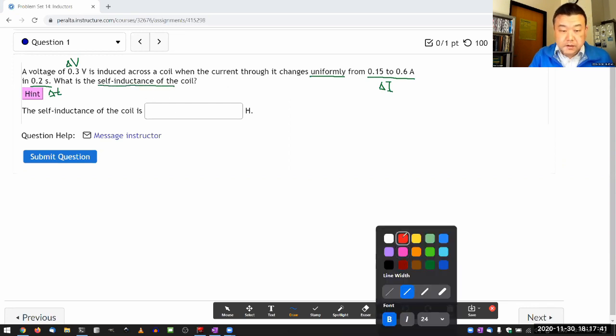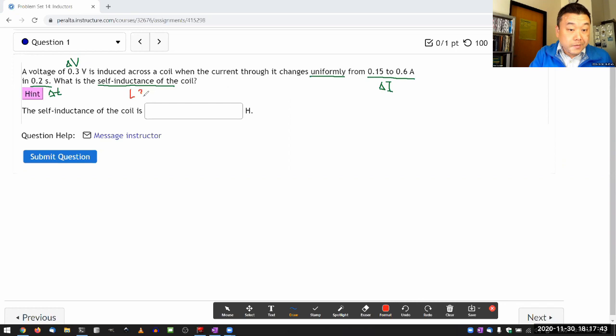It's asking for the inductance L. This is where it's good to remember the defining expression for inductance, which gives you the voltage across an inductor in terms of the inductance times the rate of change of current.